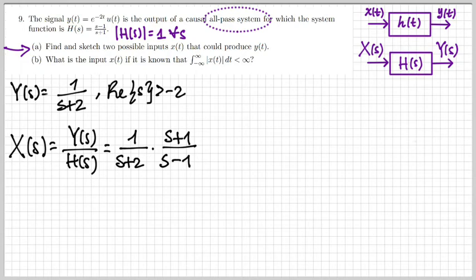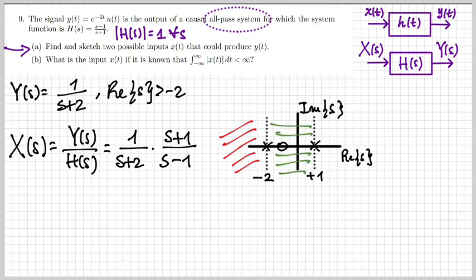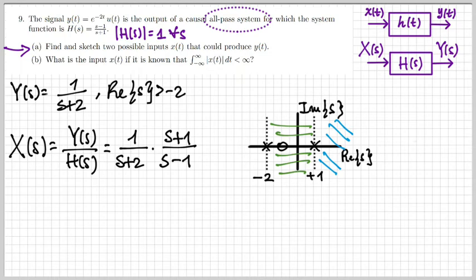We now consider the possible regions of convergence for X(s). There are three options: to the left of the pole at −2, between the poles at −2 and +1, or to the right of the pole at +1. Since Y(s) has ROC Re(s) > −2, the option to the left of −2 is incompatible and eliminated. We are left with two possibilities: the region between the poles (green) and the region to the right of +1 (blue).